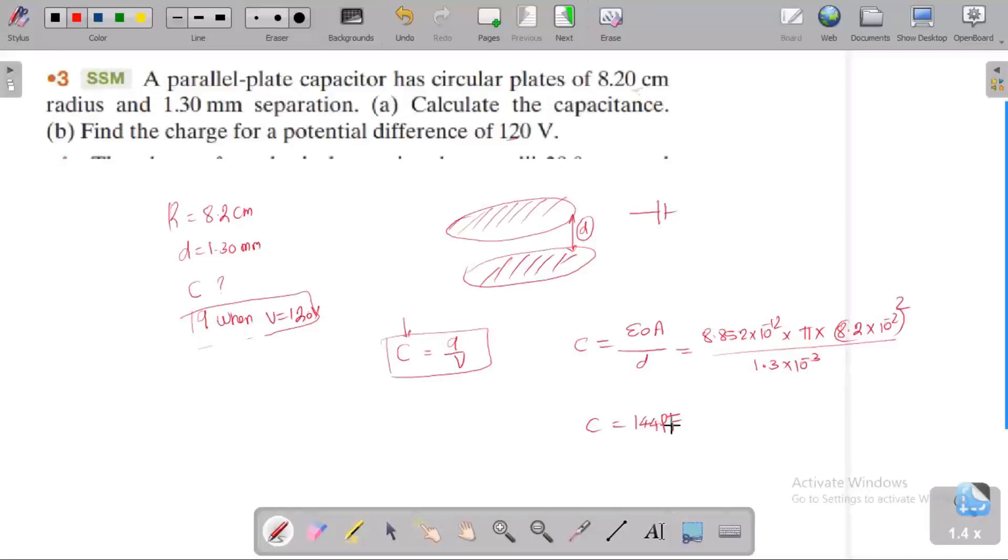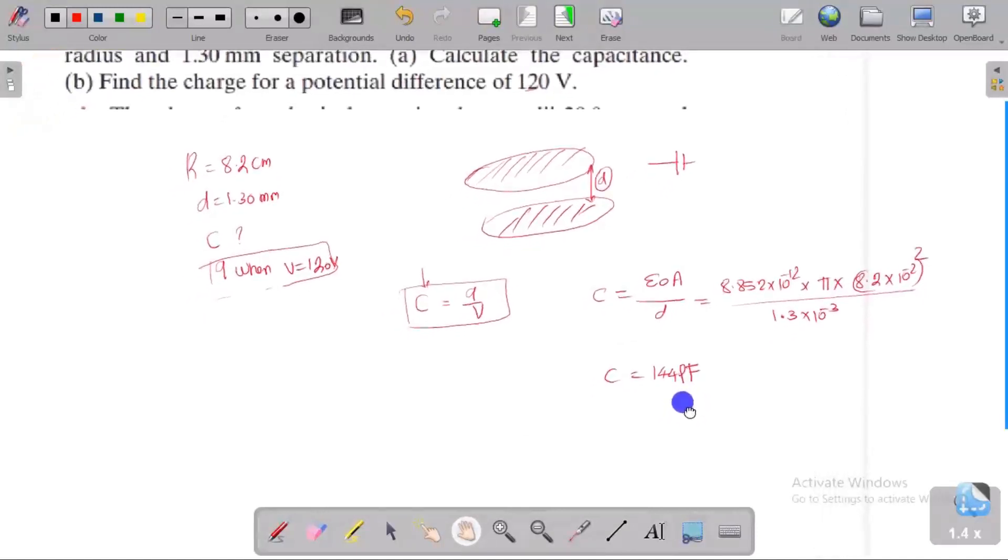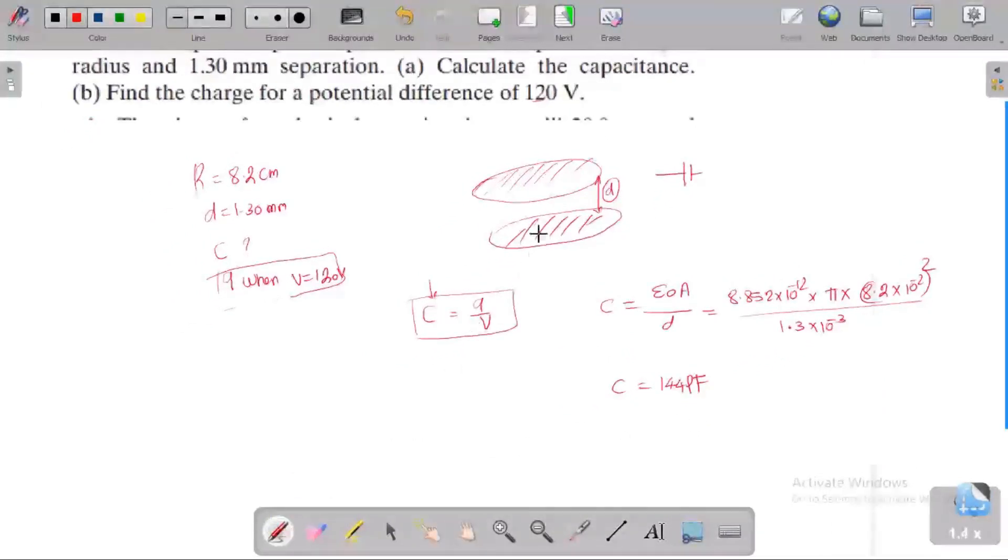So C is equal to Q by V. Q is equal to C into V. Very easy calculation. 144, the unit is in picofarad. Applied voltage is 120 volt. So we get the answer. 144 into 120.